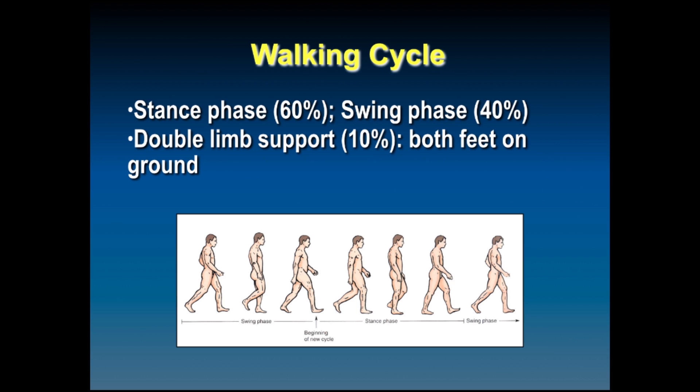The walking cycle is divided into stance phase, which is 60%, swing phase 40%, and a double limb support occurs in walking that is 10% when both feet are on the ground. The difference in walking and running is you don't have double limb support in running.